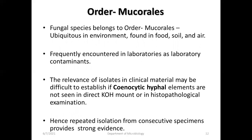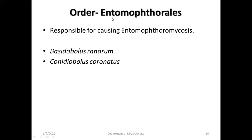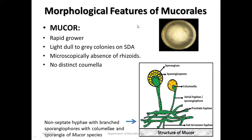In Rhizopus: non-septate hyphae with rhizoids present directly beneath the sporangiophores, which is a specific identifying feature. For Lichtheimia (Absidia): rhizoids are present at nodes but not directly beneath the sporangiophores. Sporangia are spherical or piriform, and columella is pear-shaped. The characteristic presence of stolons helps differentiate Absidia and Lichtheimia species.